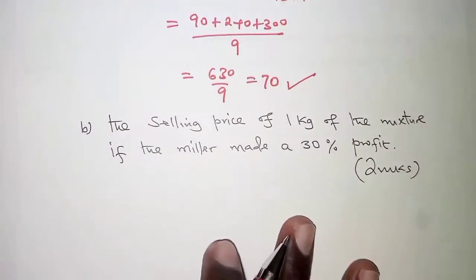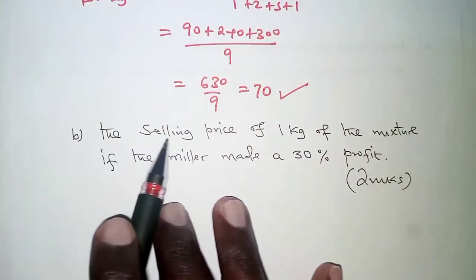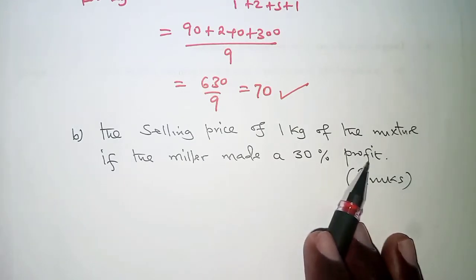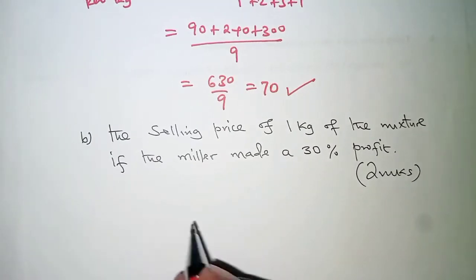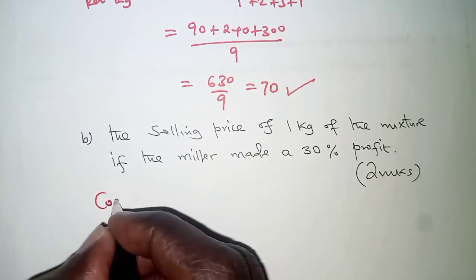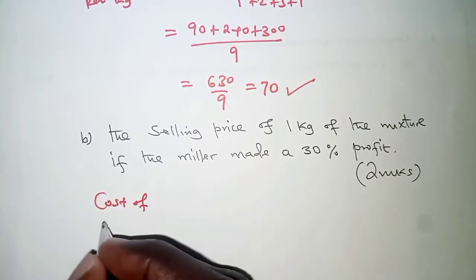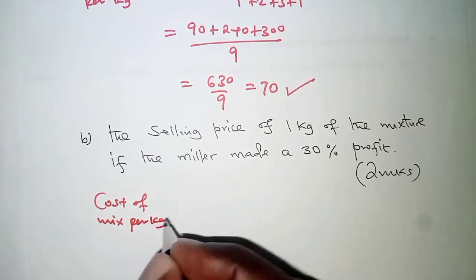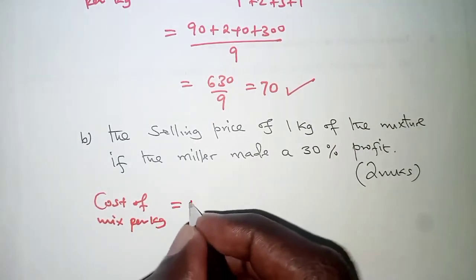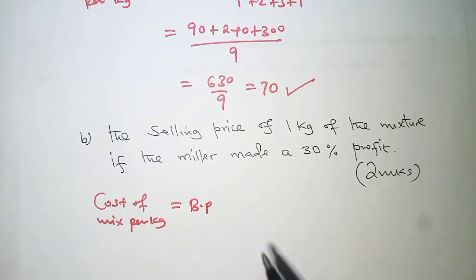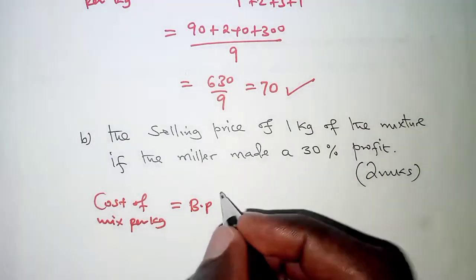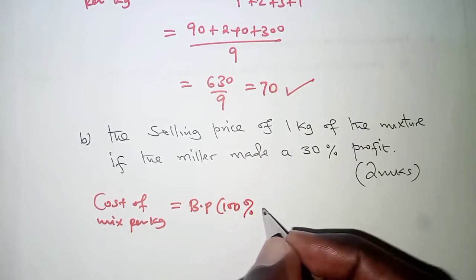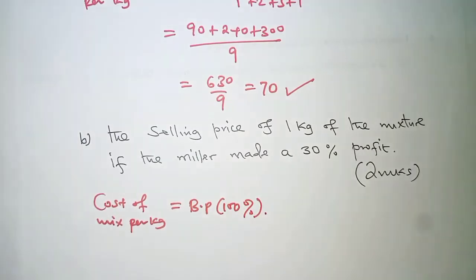For part B, we are told, calculate the selling price of 1 kilogram of the mixture if the miller made 30% profit. We need to understand that cost of the mixture per kilogram is equivalent to buying price. And we know that buying price is usually set at 100%.